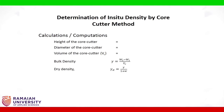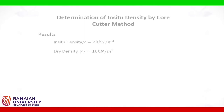Calculations: Height of the core cutter, diameter of the core cutter, and volume of the core cutter Vc are recorded. Bulk density gamma equals W2 minus W1 divided by Vc. Dry density gamma_D equals gamma divided by (1 plus W). The results of in-situ density gamma and dry density gamma_D are then presented.